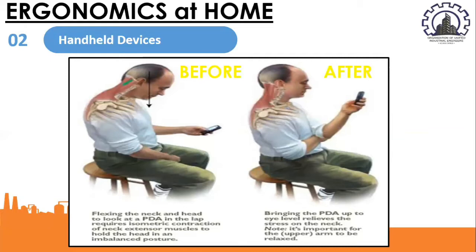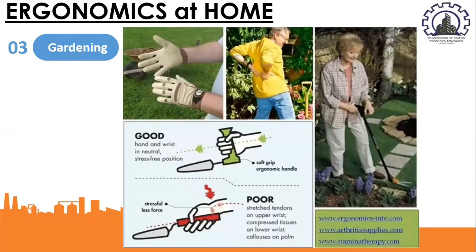Another example would be gardening. Gardening can be hard on the body due to the propensity for prolonged, awkward postures. In general, good ergonomics basics should be remembered while gardening. We need to keep work close to you, take frequent rest breaks, maintain neutral postures whenever possible, and use the proper tools, as shown on the slide presentation.